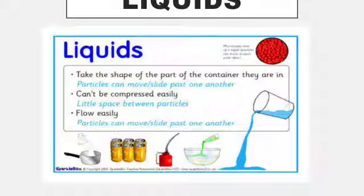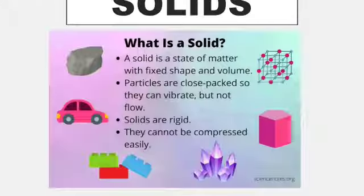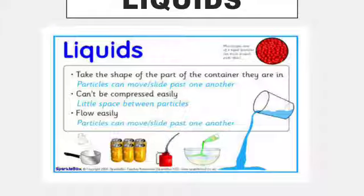Now, the next is liquid. Take the shape of part of container. The particles can move and slide past one another. If we look at liquid, particles move slightly. The shape of liquid, particles move easily. You can see water, tea, juice, milk. These are the different examples of liquid.